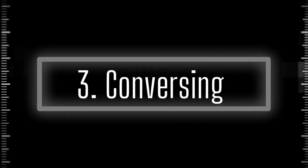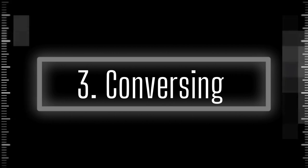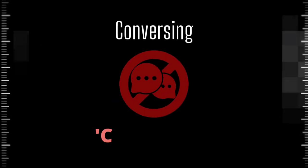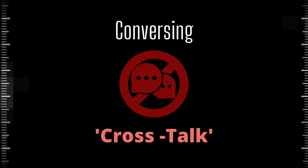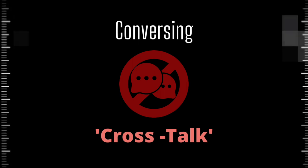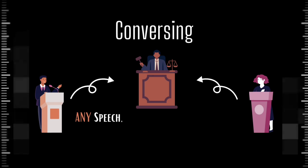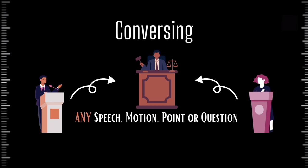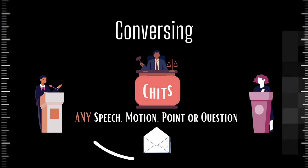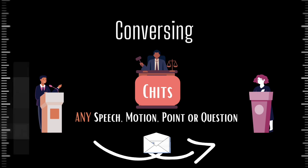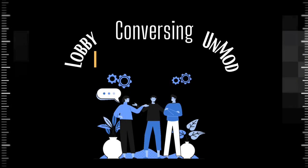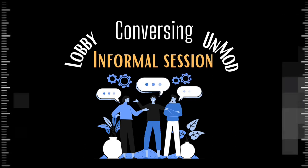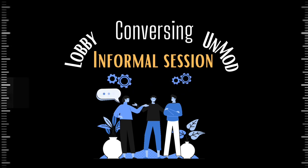Conversing: In formal committee sessions, there should be no direct communication between delegates. All attempts to verbally communicate to another delegate are referred to as cross-talk, which is highly discouraged and perceived negatively by committee dais members. Any speech, motion, point or question, even when directed to another delegate, should be addressed to the committee dais. In a formal session, delegates can communicate and lobby with each other only using chits. Delegates can directly communicate in the first person only when the committee moves into a lobbying session, such as the unmoderated caucus or the informal-informal session.